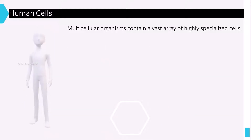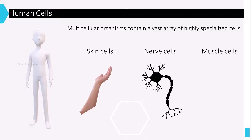Humans have skin cells, bone cells, muscle cells, and more. Each kind of cell is structured to perform a highly specialized function. Skin cells protect the body against pathogens, which are harmful bacteria, and also protect from excess water loss. Nervous cells enable reflex action.